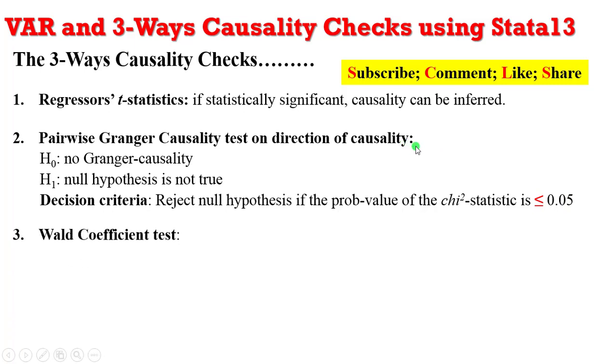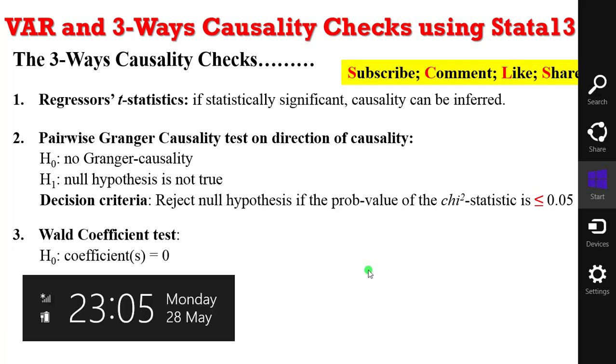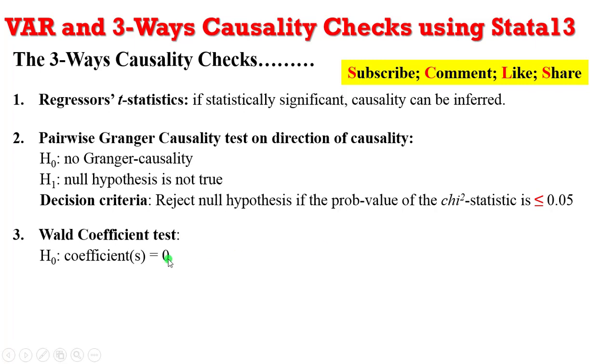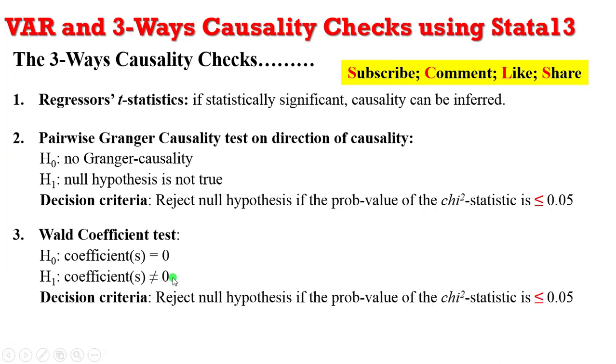The third way to detect causality is using the Wald coefficient test. The null hypothesis is that the lagged values of the regressors are equal to 0, that is not significant to influence the dependent variable, against the alternative that these coefficients are not equal to 0. And what would be the decision criteria? Reject the null hypothesis if the probability value of the chi-square statistic is lower or equal to 0.05.